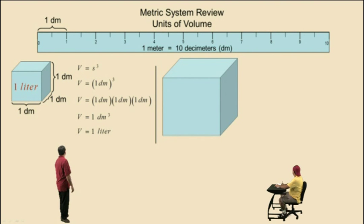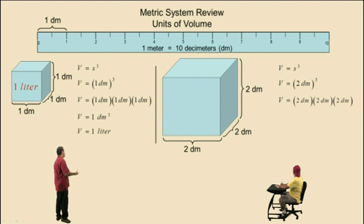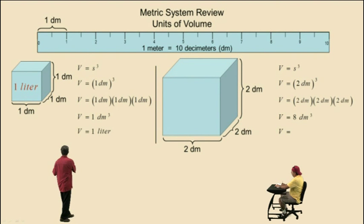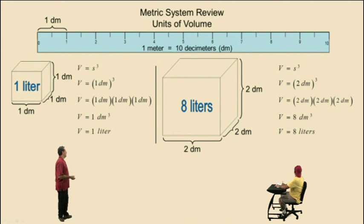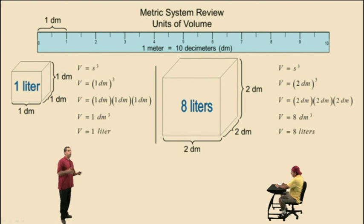Now let's increase our side length to two decimeters. The formula for the volume of a cube is side length cubed, so we have two decimeters cubed — that's two times two times two, which gives us eight cubic decimeters. If one cubic decimeter represents one liter, then eight cubic decimeters represent eight liters. Therefore, eight liters of fluid will fit into a cube with a side length of two decimeters.